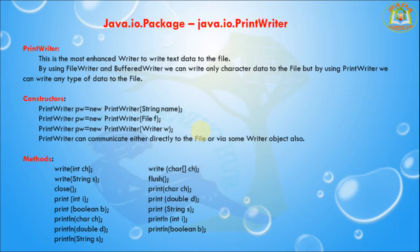By using FileWriter or BufferedWriter we can write only character data to the file, but by using PrintWriter we can write any type of data to the file. PrintWriter has three different parameterized constructors available: the first constructor takes a String argument, the second constructor takes a File as an argument, and the third constructor takes a Writer as an argument.